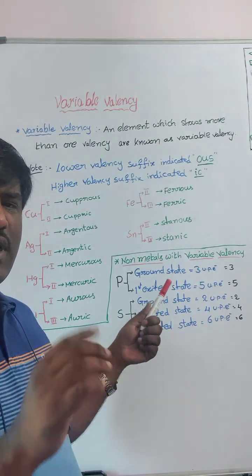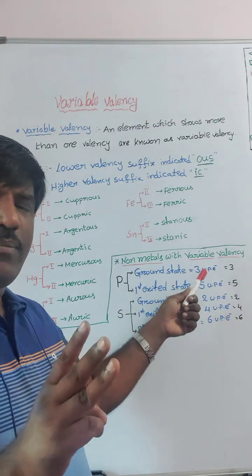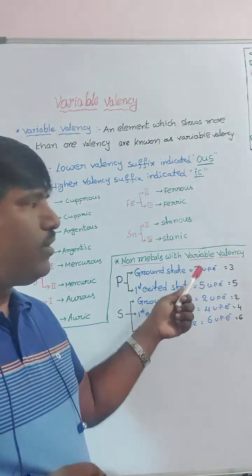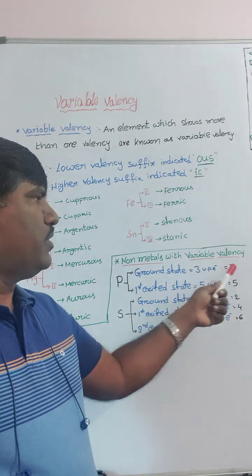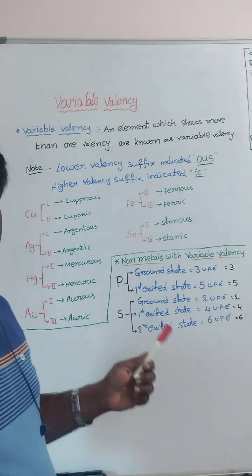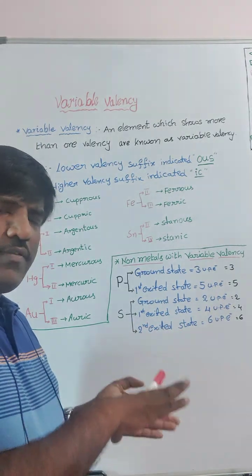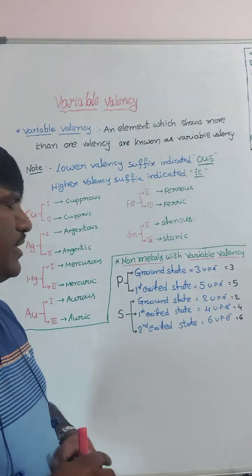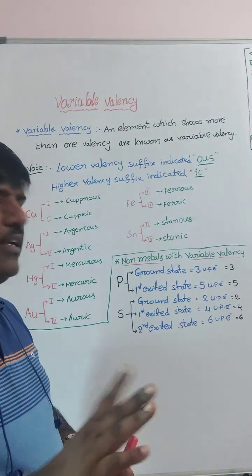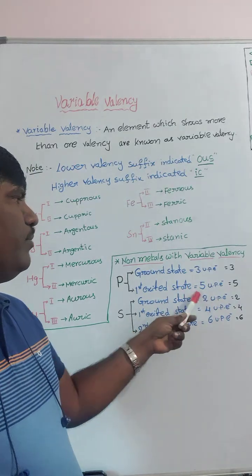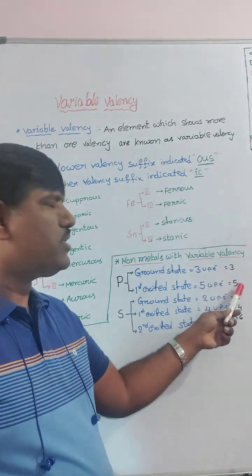Taking the electronic configuration, the last subshell is 3s² 3p³. In 3p³ we can have a maximum of six electrons, but only three electrons are present as unpaired electrons, so the valency is three. When it goes to the excited state by absorbing energy, an electron enters another orbital, giving a total of five unpaired electrons — so one more valency is five.